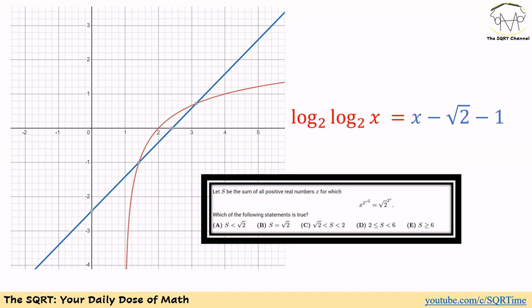Let's start with the right-hand side: x minus square root of 2 minus 1. This is a linear equation — a straight line. It passes through the x-intercept at x equals square root of 2 plus 1, and when x equals 0 it gives negative square root of 2 minus 1. We use this to plot the straight line you can see here.